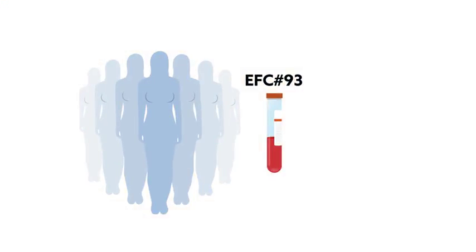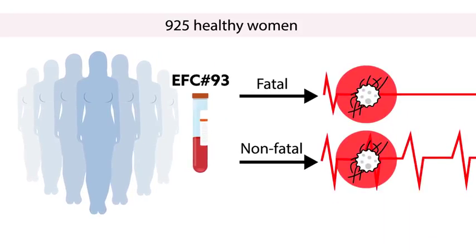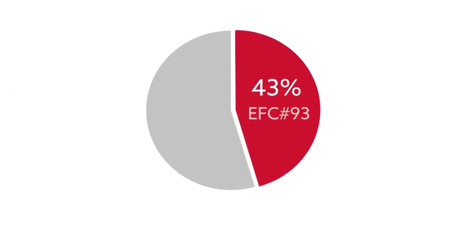The researchers then looked for EFC #93 methylation in blood samples from 925 healthy women who developed either fatal or non-fatal breast cancer within three years. The marker was found in 43% of the women with fatal breast cancer three to six months before they were diagnosed.